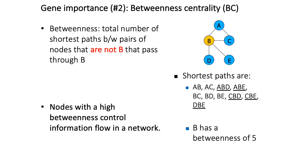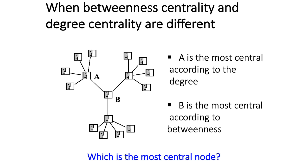Nodes with high betweenness centrality control information flow in the network by connecting many genes not just directly but also indirectly, in contrast to high-degree nodes which directly interact with many genes. Importantly, betweenness and degree centrality don't necessarily point to the same nodes. In this hypothetical example, node A has the highest degree centrality because it connects to five other nodes, whereas node B is most central according to betweenness because it connects many different groups of nodes — which you can intuitively see from the diagram.